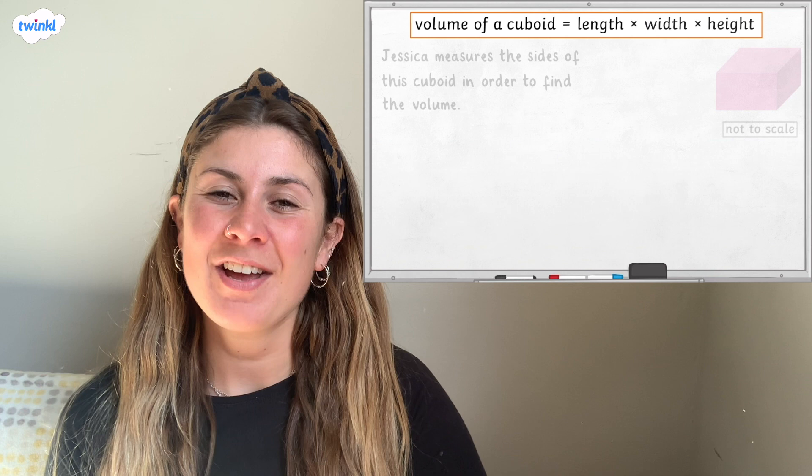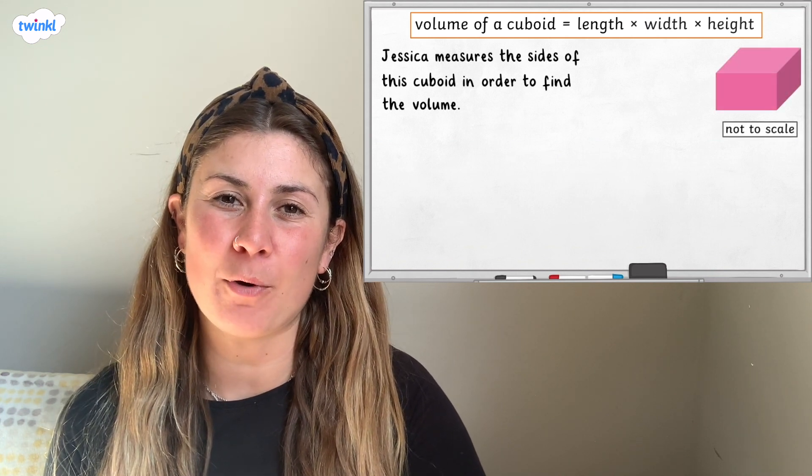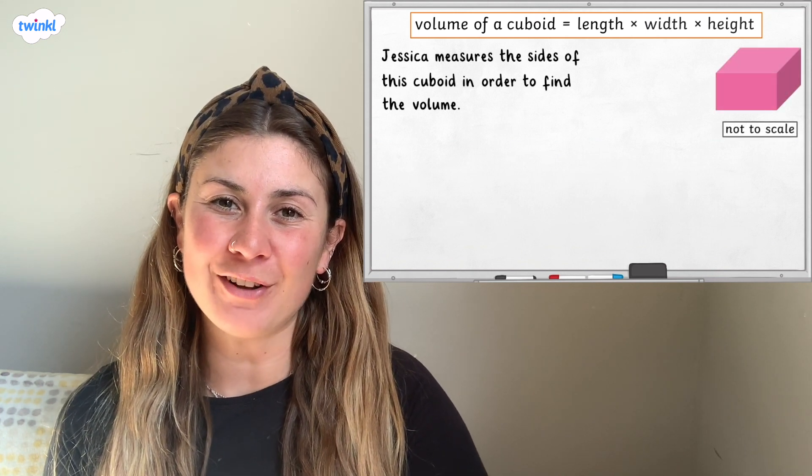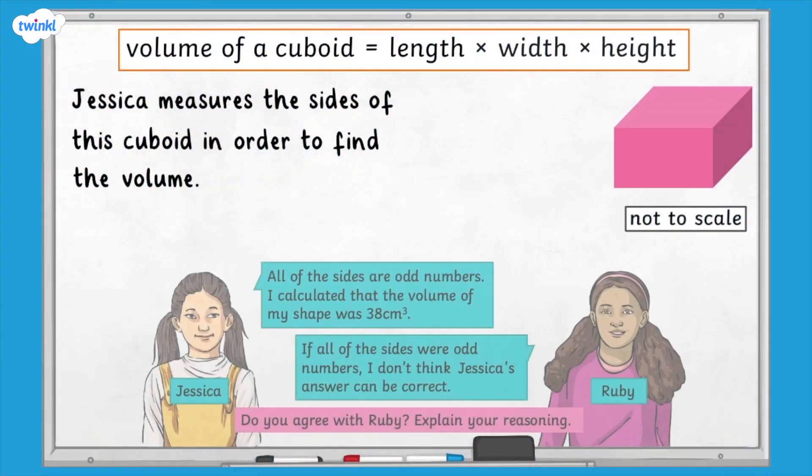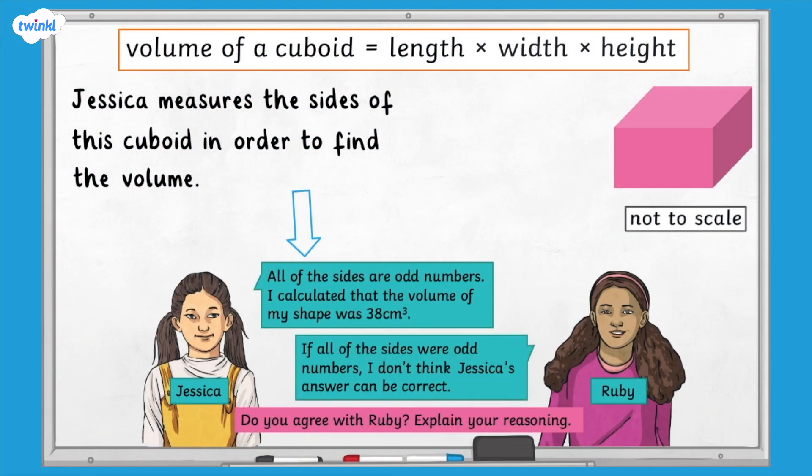Now, I think you're ready for a challenge. Jessica measures the sides of this cuboid in order to find the volume. She says all of the sides are odd numbers, and she calculated that the volume of the shape was 38 cubic centimetres.